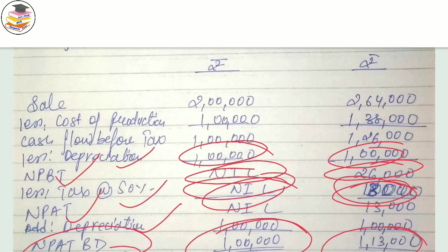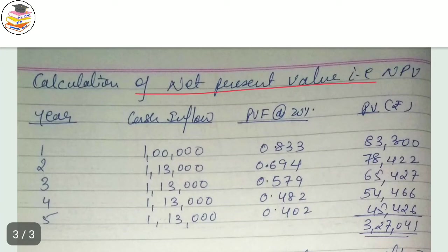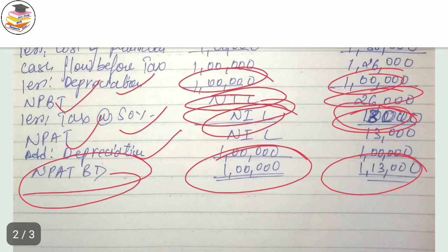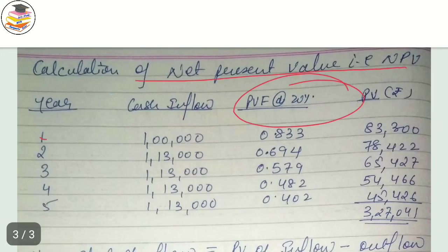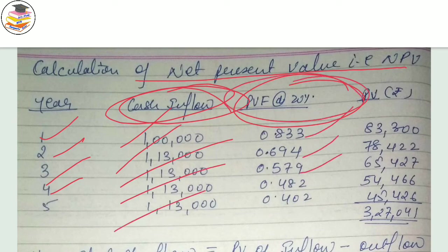After calculating tax, deduct the tax amount and then add back your depreciation to get net profit after tax before depreciation. This is your net cash inflow. Now calculate the net present value using the present value factor at 20 percent. Your cash inflows are: year 1 = 1,13,000 and years 2 to 5 = 1,13,000. In the exam you get a sheet of present value factors at 20 percent.